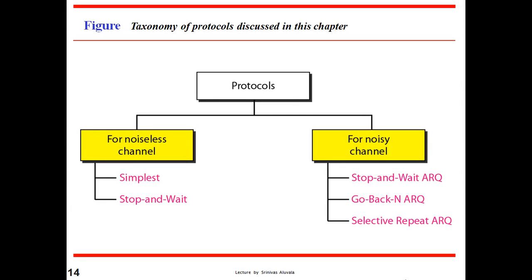As of now, we consider noiseless channels, though in real-time network communications a truly noise-free channel is very rare. For noiseless channels, we have two simple protocols: the simplest protocol and the stop-and-wait protocol. For noisy channels, we have three protocols: stop-and-wait automatic repeat request, go-back-N automatic repeat request, and selective repeat automatic repeat request. In this session, we cover only the noiseless channel protocols.